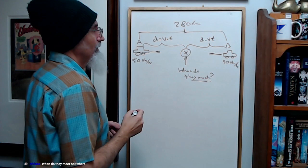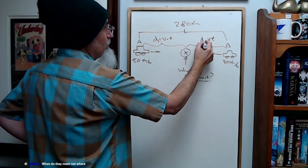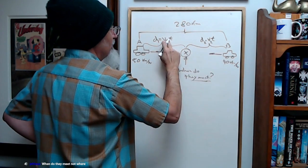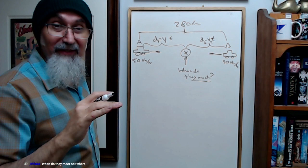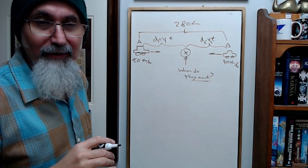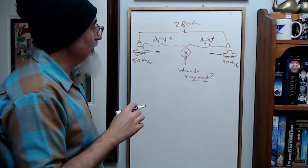Right. Now the total distance, this is d1, this is d2. This is d1 of e1, this is d2, and the time is going to be the same, right? When do they meet? Not where. Yeah, when do they meet? Well, once you figure out the where, you can figure out the when as well.